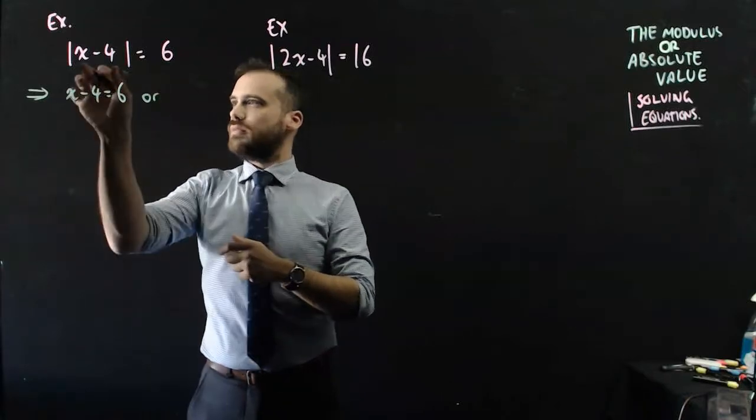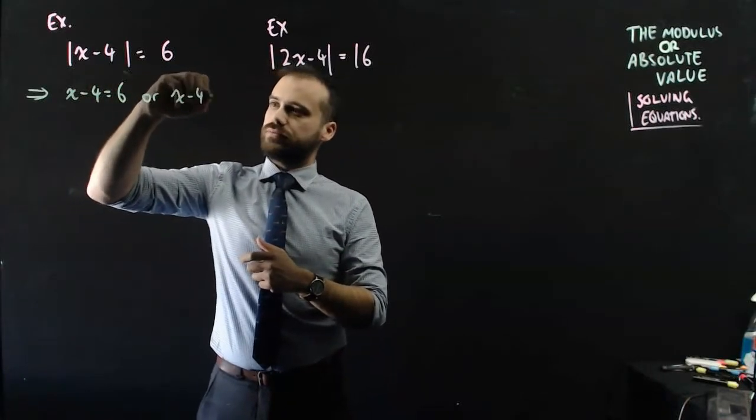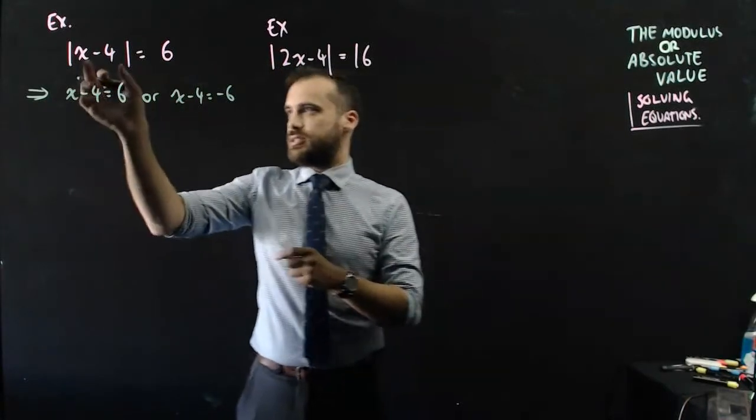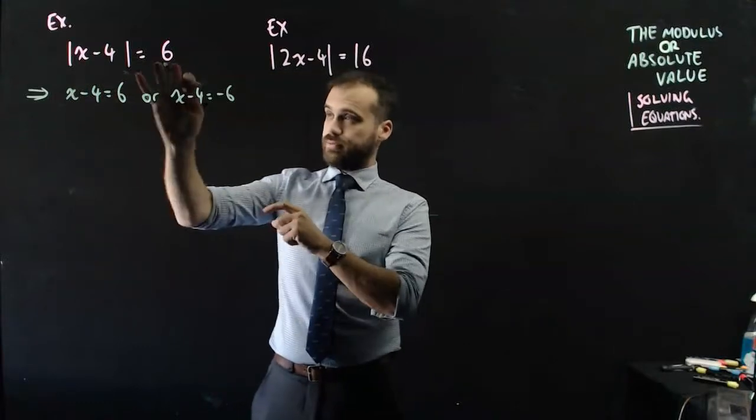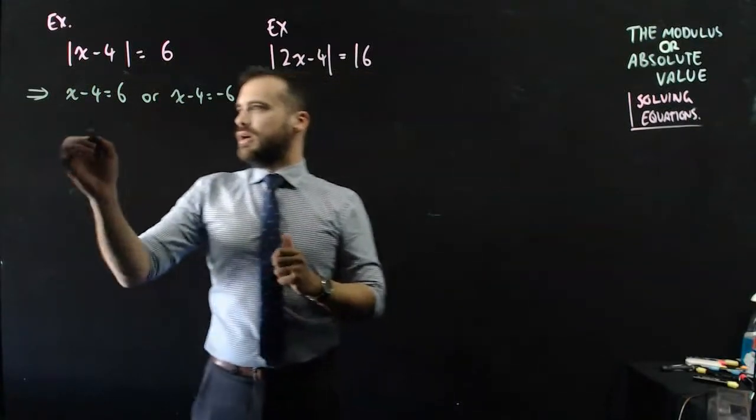Or x minus 4 equals negative 6. That is, the thing in the brackets is the negative version of whatever that is. And then we just solve.